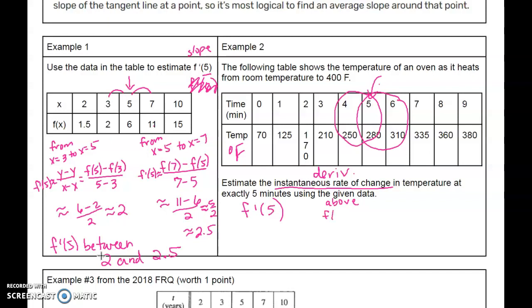From above, I've got f(6) - f(5) over 6 - 5. From below, f(5) - f(4) over 5 - 4. So f'(5) from above is 310 minus 280 over 1. I would write it out because if you make a small error, you still earn full credit. So we get 30.